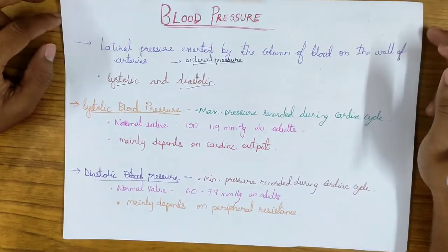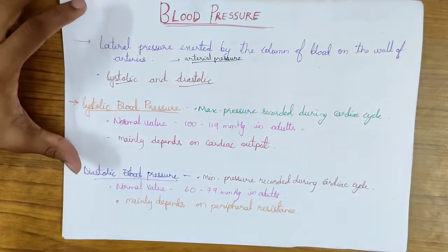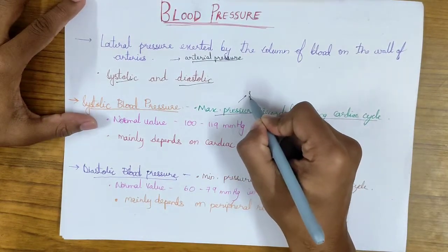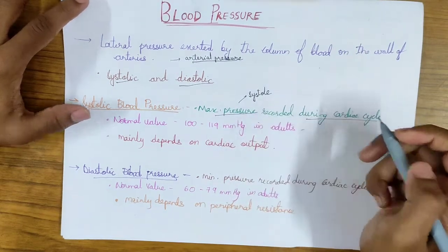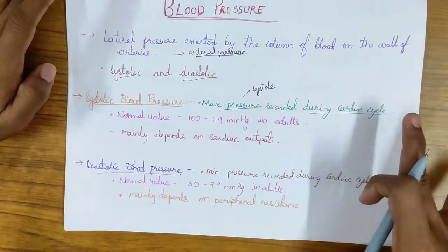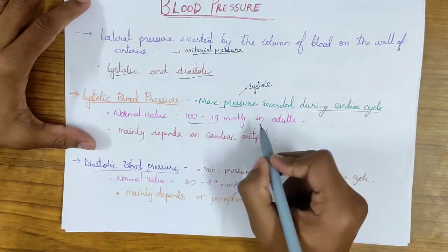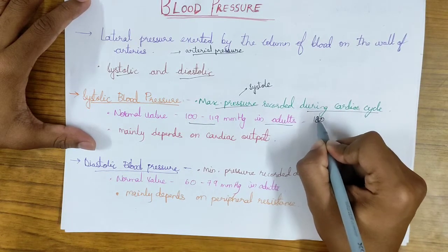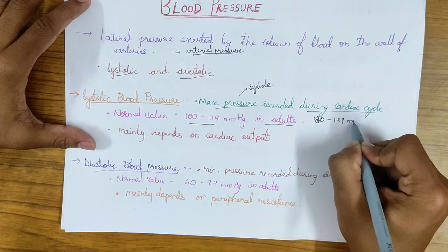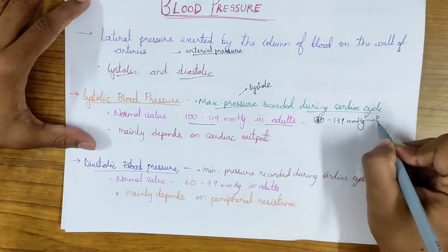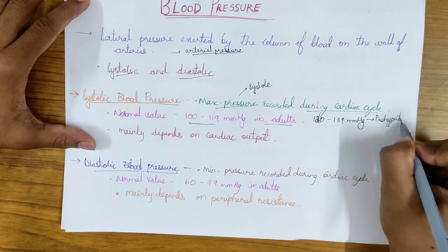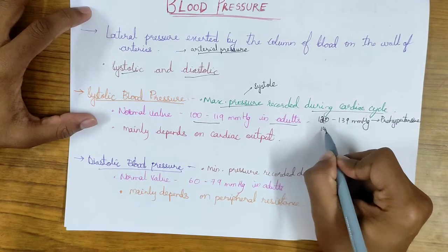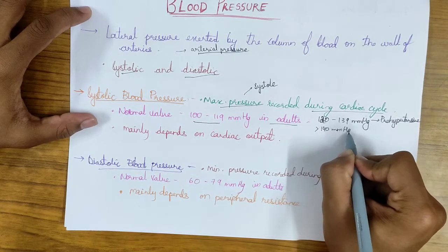Systolic blood pressure is the maximum pressure recorded during the cardiac cycle. This maximum pressure is seen in systole. Its normal value is 100 to 119 mmHg in adults. If it's 120 to 139 mmHg we can call the patient pre-hypertensive, meaning they are approaching the hypertensive zone. But if it's more than 140 mmHg the patient can be called hypertensive.